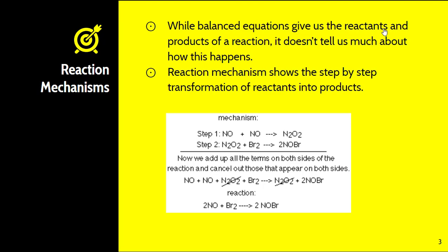When we look at step-by-step mechanisms, we cancel intermediates that appear on both the left and right-hand sides. So those cancel out, leaving NO and Br on the left side and two NOBrs on the right side. Thus, the full equation is 2NO plus Br2 yields 2NOBr.